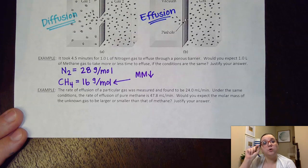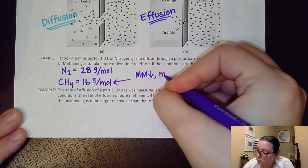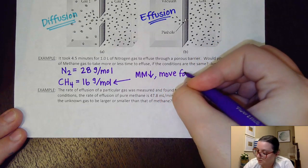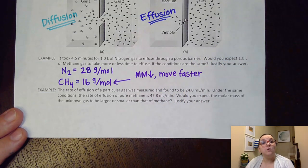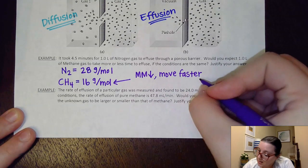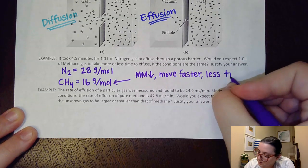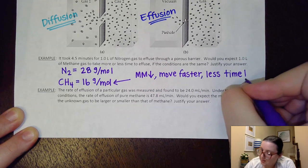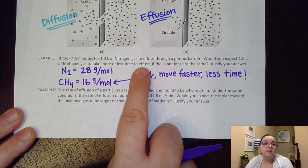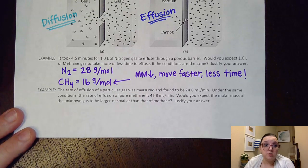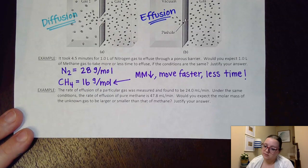If it has a lower molar mass, if I'm dealing with a smaller mass of molecule, then what that means is that it is going to move faster. Its velocity would be increased. And so if it's moving faster, then what that would mean is that it would take less time to escape out of that pinhole. It would take less time to do an effusion process, as well as to do a diffusion process, depending on what the question asked. So again, molar mass makes all the difference with these.